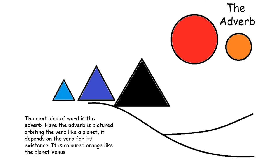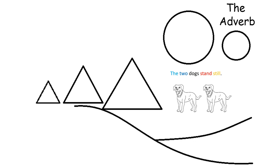The next kind of word is the adverb. Here the adverb is pictured orbiting the verb like a planet. It depends on the verb for its existence. It is colored orange like the planet Venus. In this sentence you can see that I've colored the word still orange for the adverb. The word still describes how the dogs are standing and so it is an adverb.